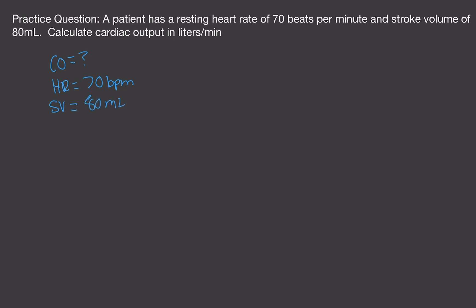So we use this equation. And let's do the math. So this is 70 times 80, which equals 5,600 milliliters per minute.